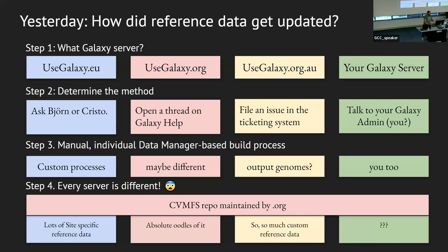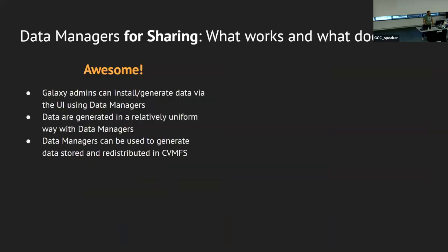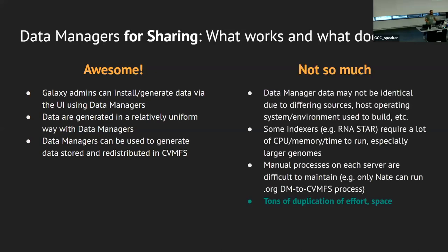The biggest issue with this process is you end up with a lot of duplication of both effort and space. All of the big Galaxy servers want all these model organisms and all these indexes for the common tools. Why are we all building them individually for our servers and hosting them, using all that space and spending all that time? So the solution we've come up with is this project called the Intergalactic Data Commission or IDC. But if you go look at our repository, the first commit was five years ago — why am I only talking about it now? We've been trying to get it going all these years.